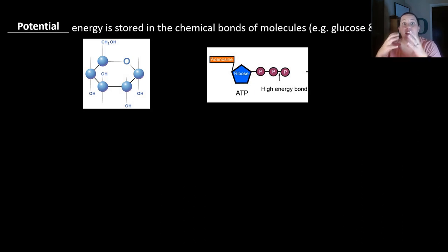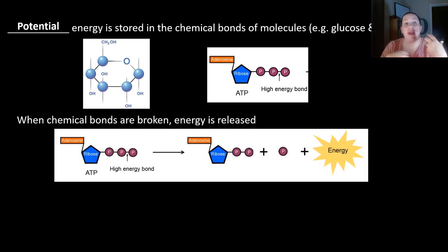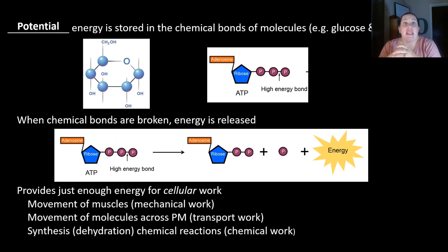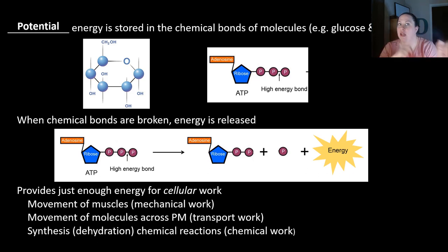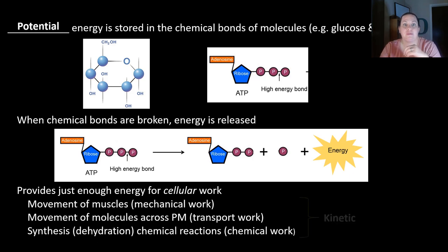Potential energy is stored in the chemical bonds of molecules — like glucose or even ATP. That high-energy last bond in ATP is where we find our potential energy. When chemical bonds are broken — catabolism — energy gets released. ATP provides just enough energy for cell work: muscle movement, active transport of molecules across membranes, and synthesis reactions like dehydration reactions in cells. This is why we use ATP as our energy currency — these are all examples of kinetic energy inside your cells.